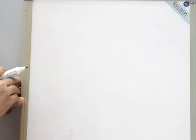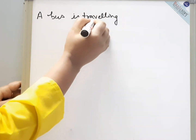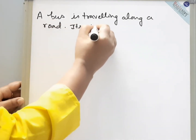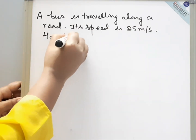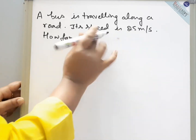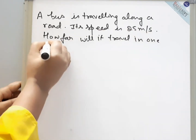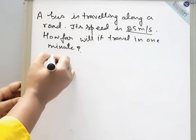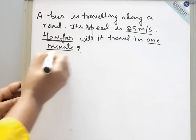We will do another question. A bus is traveling along a road. Its speed is 25 meters per second. How far will it travel in 1 minute? As you can see in this question, speed is given, and what they are asking is how far, which means we have to calculate distance. Time is also given, that is 1 minute.